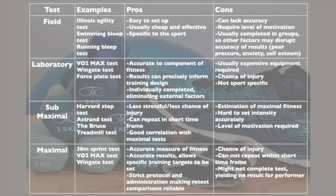Lab tests — examples include VO2 max, Wingate, and force plate tests where you see how high you can jump and the force plated through your gate. The pros of lab tests: unbelievably accurate to the components of fitness you're measuring; results can be precise and inform training design; individually completed, eliminating external factors; and usually completed in a lab so weather isn't a factor. Cons: usually very expensive, and the results are not sport specific — albeit you can argue the results can be linked to the sport, it doesn't give you sport-specific feedback.